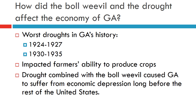In addition to the damage caused by the boll weevil, Georgia's farmers suffered through another natural disaster in the 1920s and 1930s: a drought. The worst droughts in Georgia's history were from 1924 to 1927 and 1930 to 1935. These droughts severely impacted Georgia farmers' ability to produce agricultural products. With the damage caused by the boll weevil and the droughts, Georgia began to suffer from a depression long before the rest of the United States.